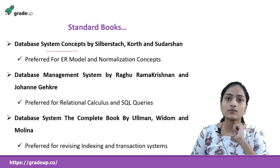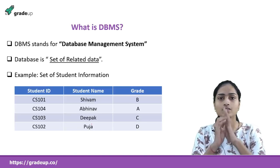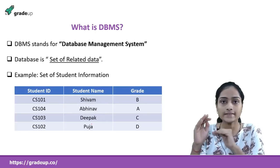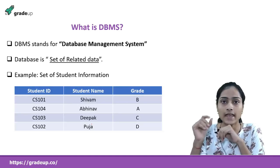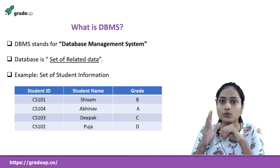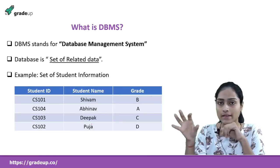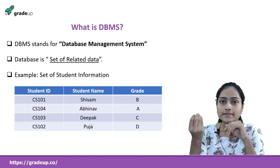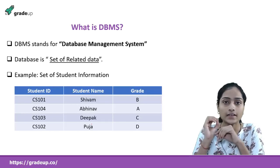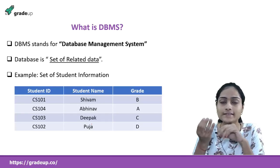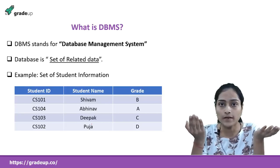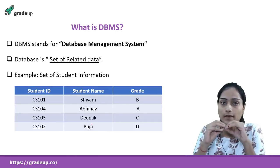Let us now start with what DBMS is. DBMS stands for Database Management System — D for Data, B for Base, M for Management, and S for System. Let us divide it into two parts: Database and Management System. Database can further be divided into Data and Base. Data is a set of related values — for example, a set of names, a set of roll numbers, a set of student IDs, and so many things.